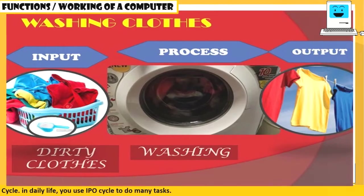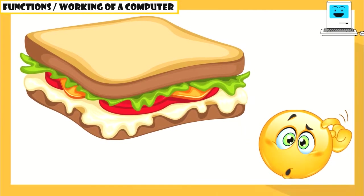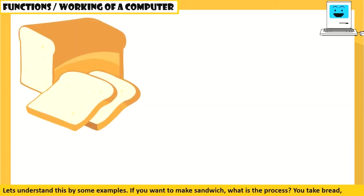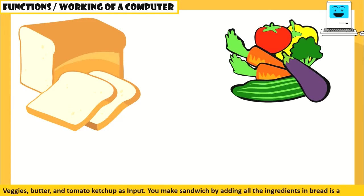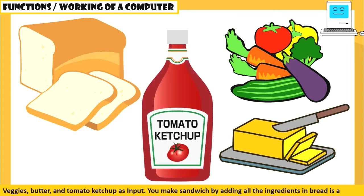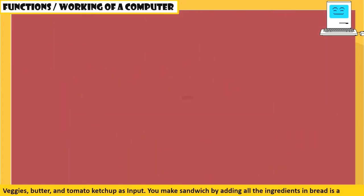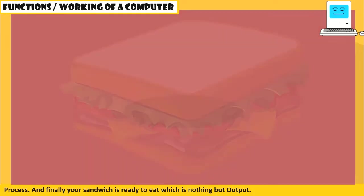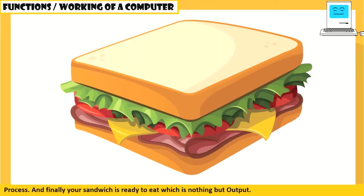Let's understand this with one more example. If you want to make a sandwich, what is the process? You take bread, veggies, butter, and tomato ketchup as input. You make a sandwich by adding all the ingredients in bread as the process. And finally, your sandwich is ready to eat, which is nothing but output.